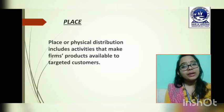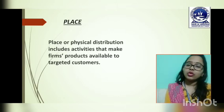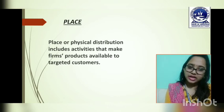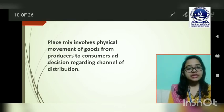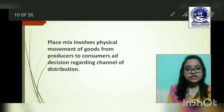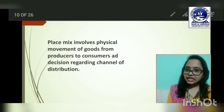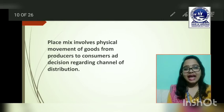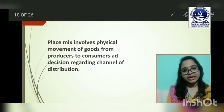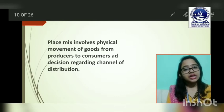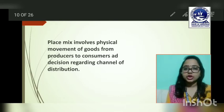Place mix refers to different types of intermediaries — wholesalers, agents, retailers, etc. More intermediaries means a higher price for the product; fewer intermediaries means a lower price. Place mix involves the physical movement of goods from producers to consumers and decisions regarding channel of distribution. The producer can choose to reach consumers directly without any intermediary, but the product must reach the consumer at the time they need it.